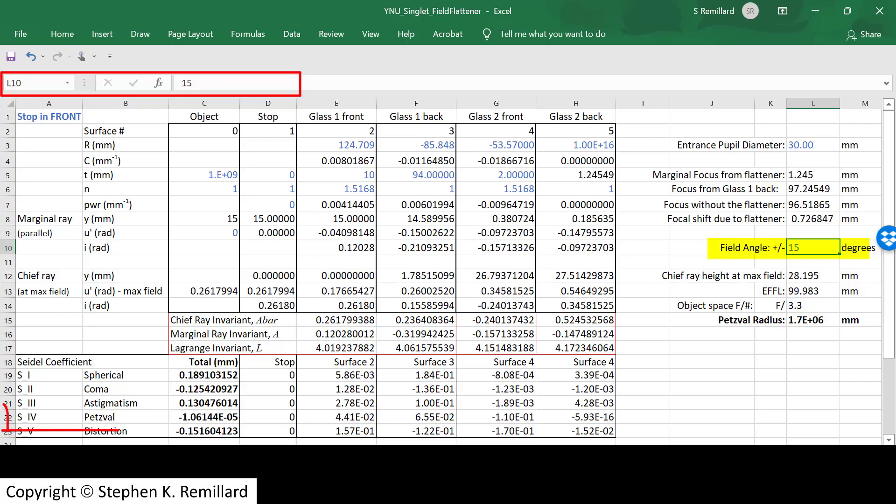You can play with that. You can make the field of view larger, and look what happens. The Seidel coefficient gets much larger. You have to use the chief ray height at max field in order to calculate the Petzval radius. And that, again, is just geometry. The height of the chief ray as it exits the back surface and the angle are used in a triangle to calculate the height at the image. Effective focal length is just there because I designed this to have an effective focal length of 100 millimeters.